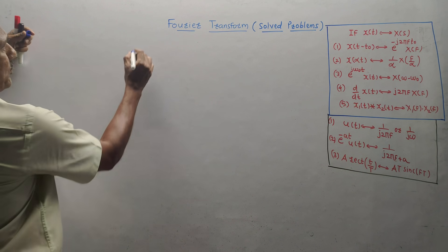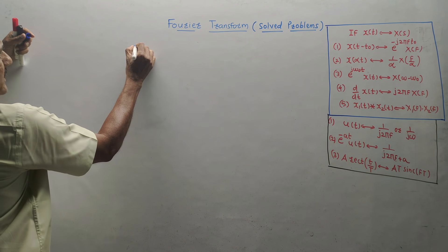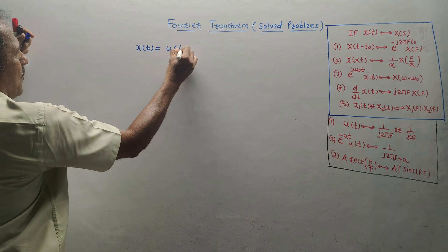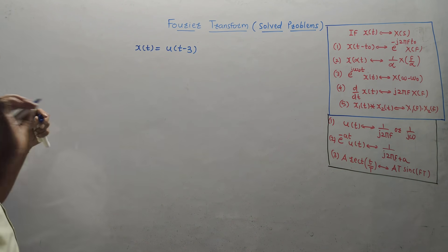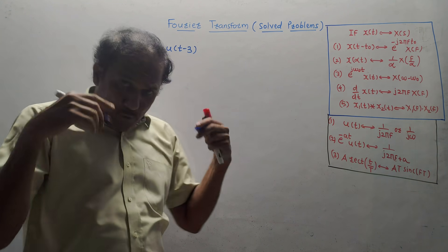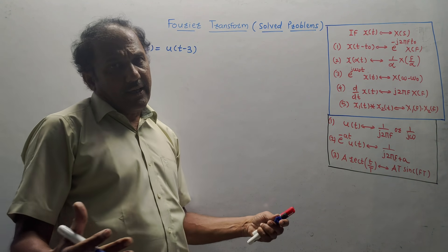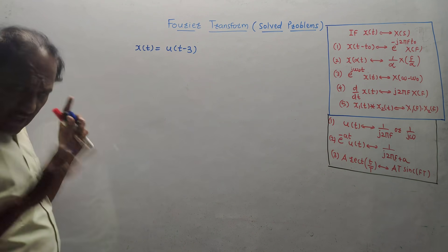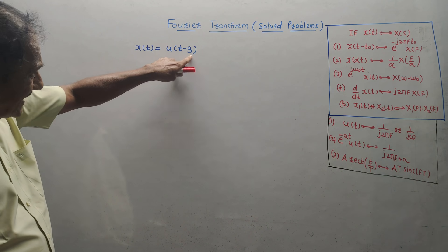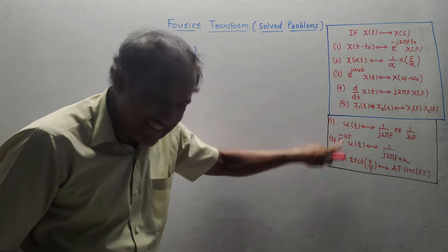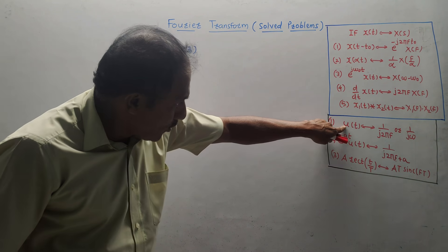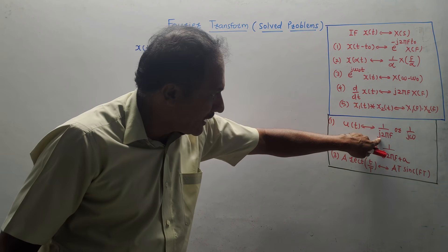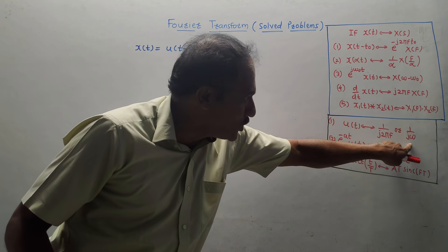So let us jump to the first numerical. Question: calculate the Fourier transform of x(T) = U(T − 3). The given signal is U(T − 3). The basic related standard signal is U(T), whose Fourier transform is 1/(J2πF) or equivalently 1/(Jω), since 2πF is the same as ω.